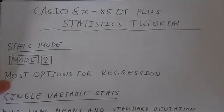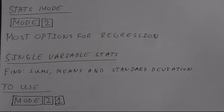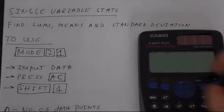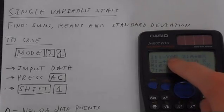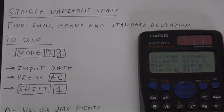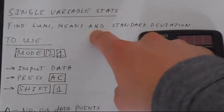When you put in mode 2, you'll notice that most of the options are for regression calculations. Most of the time you'll simply be using single variable stats. So this is just mode 2 and then 1. You've got one var, one variable. All of these others are used for regression or multivariable statistics.